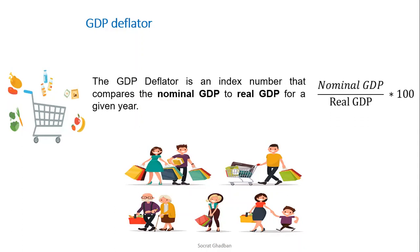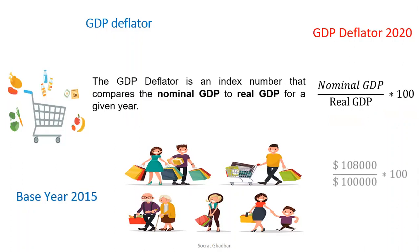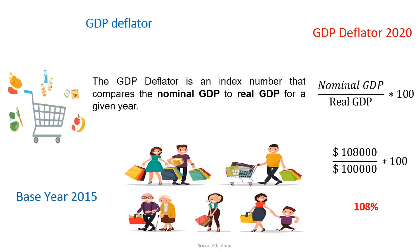The formula to calculate the GDP deflator is nominal GDP divided by real GDP. For example, for year 2020, with a base year of 2015, if the real GDP for 2020 is $100,000 and the nominal GDP is $108,000, then the GDP deflator is 108%. This result means that the aggregate level of prices increased by 8% from the base year 2015 to the current year 2020.